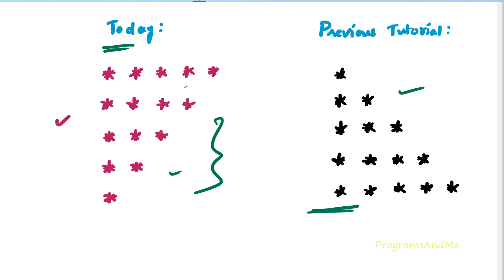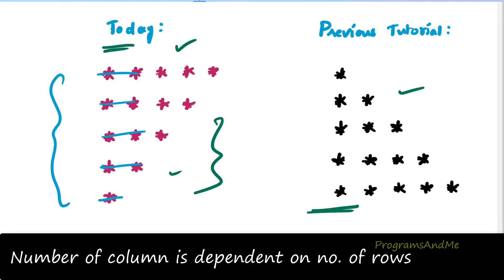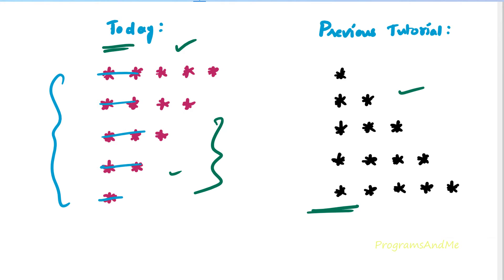First let's look at the input and output. We know the output — we want to print stars in this shape — but what about the input? The input is asking the user to enter the number of rows. Our pattern contains 5 rows, but we can write it with 4, 10, or 15 rows. We are not asking about columns because the column count is related to the row count in this pattern.